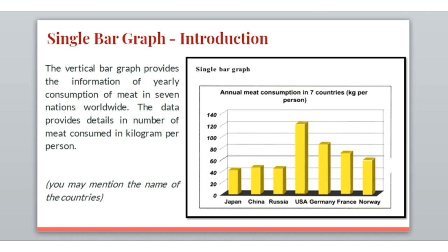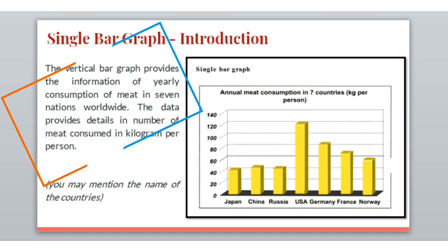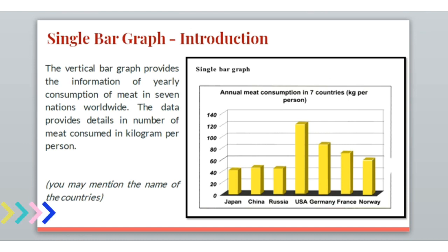Let me show how the introduction is written. The vertical bar graph provides information of yearly consumption of meat in seven nations worldwide. The data provides details in number of meat consumed in kg per person. Here we have tried to use synonyms and explain the topic in our own words. You may mention the name of countries as well, but since listing all countries makes the number quite high, it is preferable not to include them.